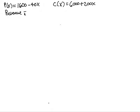Revenue can be found by multiplying price times the number of units that you sell. So in this case, we're going to have r of x equal to 1600 minus 40x times x.